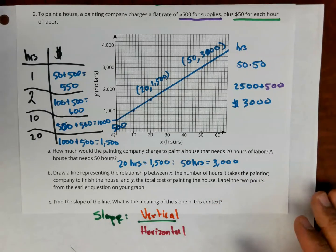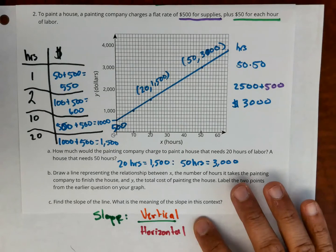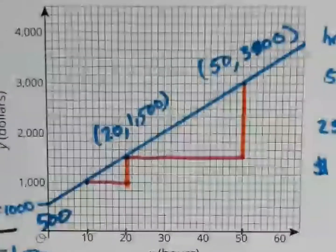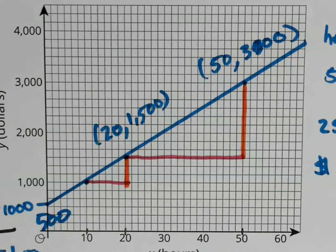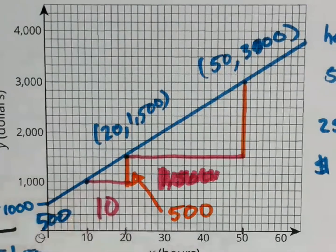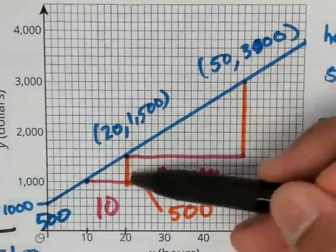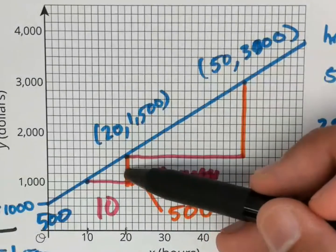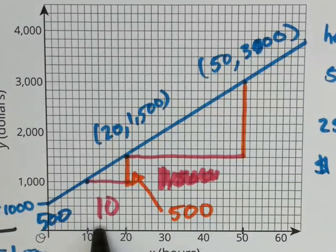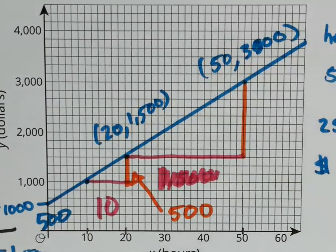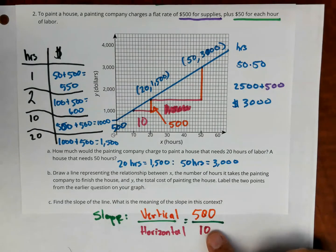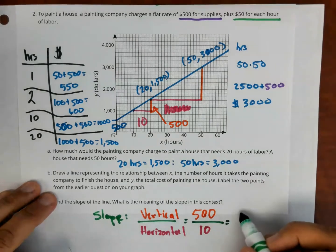Okay, so now we're going to do Part C, find the slope of the line. Remember that slope is the vertical over the horizontal. So I can pick two points here, draw a slope triangle. So here I have two slope triangles. Remember, when you're doing slope, it doesn't matter which slope triangle you use, you will get the same number. In this small triangle, the vertical number is 500. It goes from 1,000 to 1,500, which is 500. The horizontal change goes from 10 to 20, which is a change of 10. So the slope is vertical over horizontal, which is 500 over 10. I can simplify this, and when I simplify, I get 50.